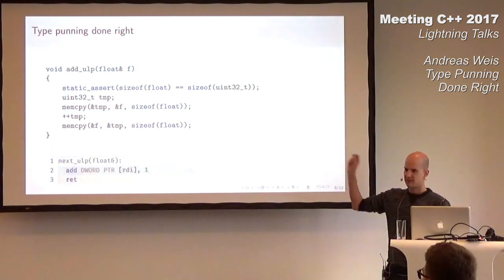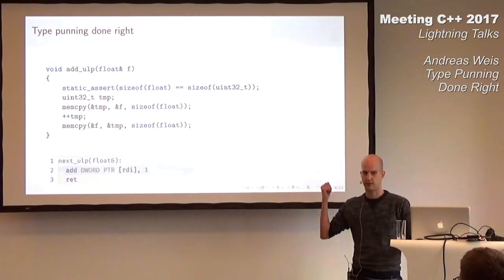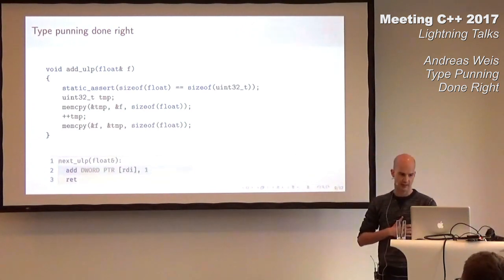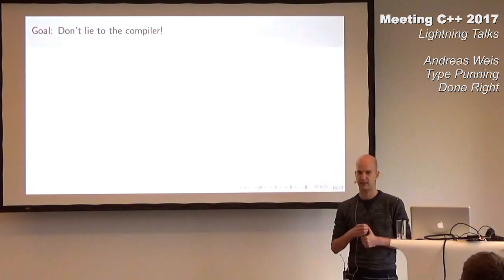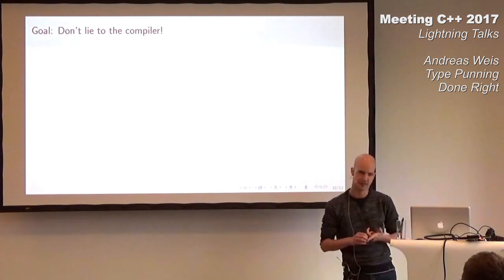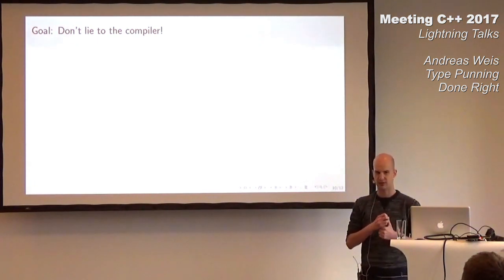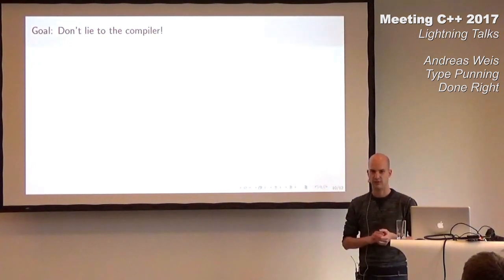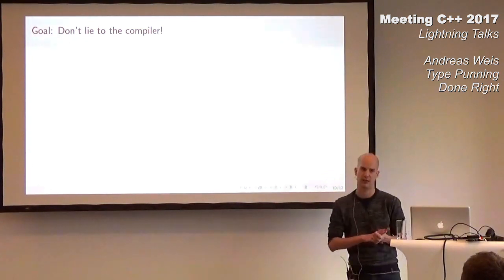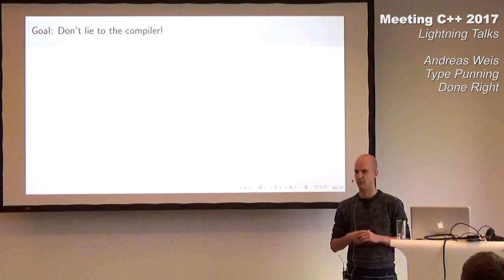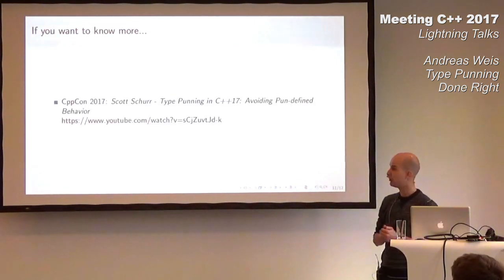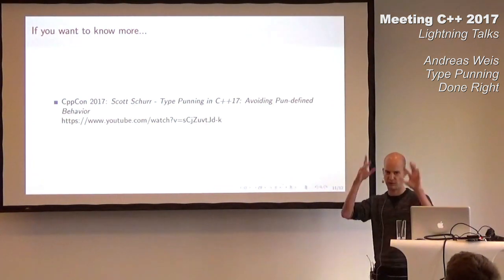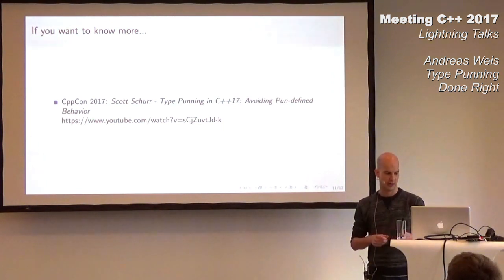This might still seem unnecessarily complex, especially if you're coming from a C background, but I actually think it's not that bad. The reason goes back to something from both keynotes — both had a slide where they say don't lie. Sean said don't lie to your users in your user interface, and Kate said don't lie in your code to your fellow developers. I want to add to that: don't lie to the compiler. Don't try to smuggle types into functions through pointers that have the wrong type. Just tell your compiler the truth and it will figure out the right thing to do. If you want to know more, there was also a talk at CppCon that goes into a lot more detail on this problem. Highly recommended.